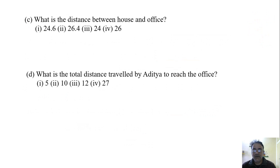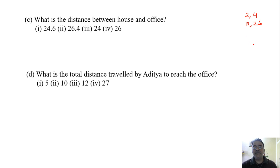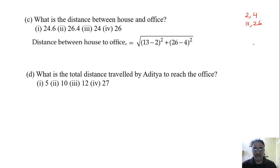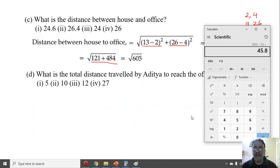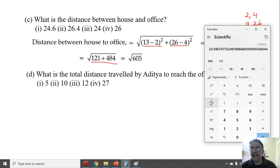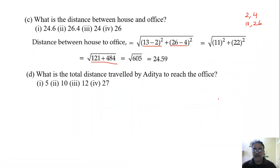Third question: what is the distance between house and office? The house is at (2,4) and office at (13,26). Using the distance formula: √((13−2)² + (26−4)²). We get 11² = 121 and 22² = 484. Adding 121 plus 484 gives 605. The square root of 605 is approximately 24.5967.